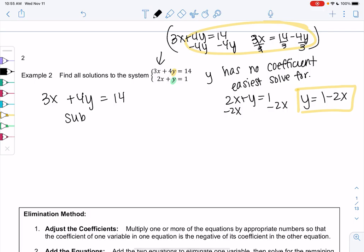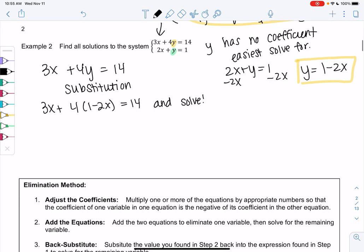Step 2 tells me to substitute into the other equation. So I'm going to replace y with 1 minus 2x. So we have 3x plus 4y equals 14. And then we could do this thing called substitution. So 3x plus 4. So instead of y, 1 minus 2x equals 14. And then we can solve this equation.